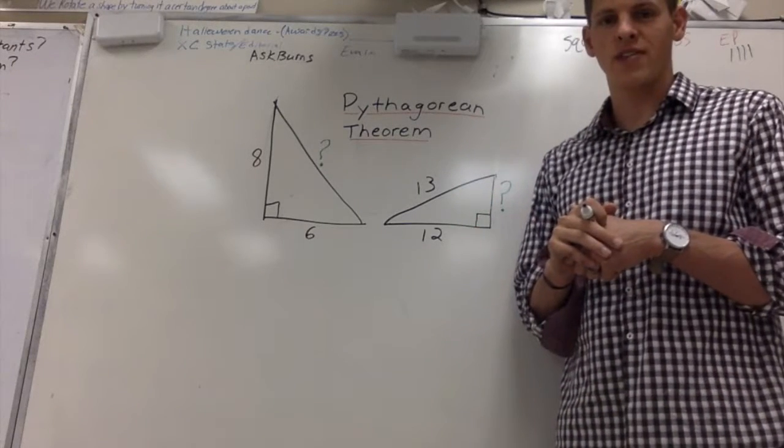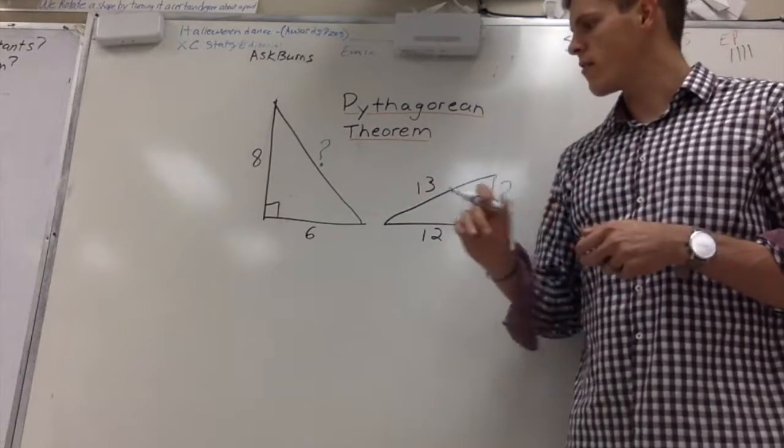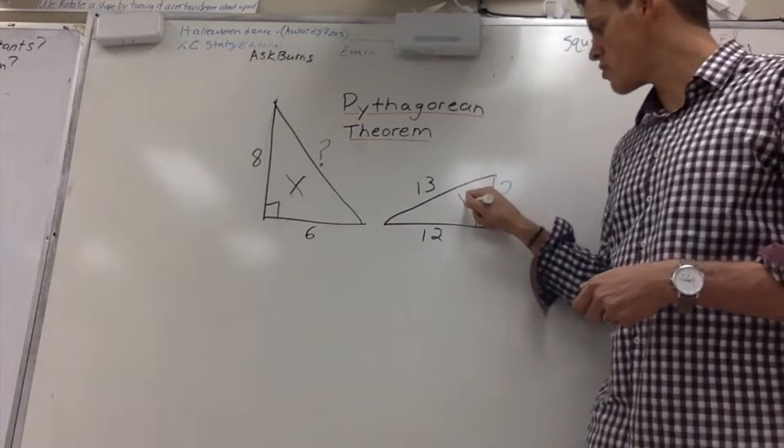You're here to learn about how to solve for sides using the Pythagorean theorem. Right here we have our first triangle, triangle X, and we have over here a triangle Y.